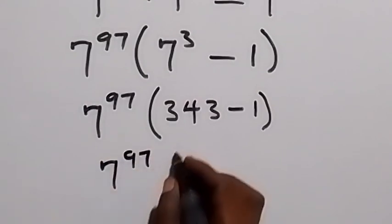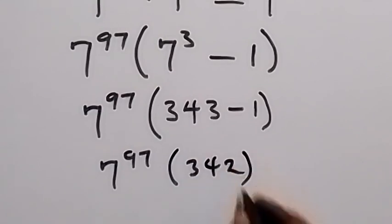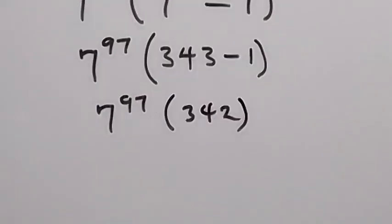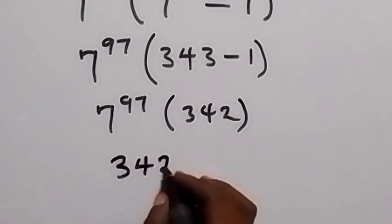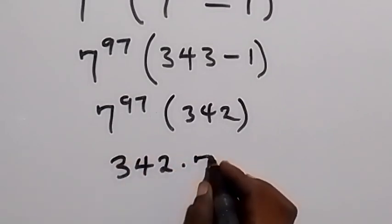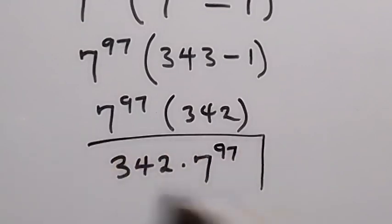And then from here we can simply write this as 342 multiplied by 7 raised to power 97, and here we have a simplified form of this problem.